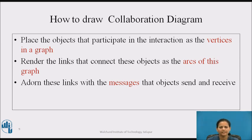To show nesting, we use Dewey decimal numbering: 1 is the first message, 1.1 is the first message nested in message 1, 1.2 is the second message nested in message 1, and so on. We can show nesting to an arbitrary depth. Along the same link, we can show many messages, possibly being sent from different directions, and each will have a unique sequence number.